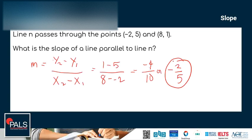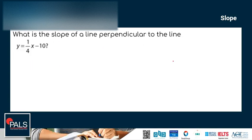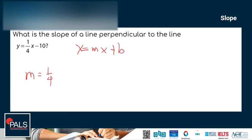Now, what is the slope of a line perpendicular to the line y equals one-fourth x minus 10? Since this equation is already in the form y equals mx plus b, the slope is one-fourth. The slope of a line perpendicular to this line is the negative reciprocal, which is negative 4.